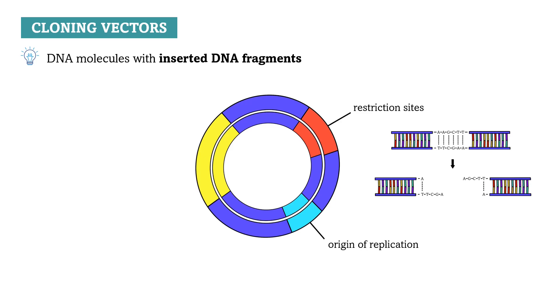And finally, they should carry a selectable marker. For example, an antibiotic resistance gene can act as a selectable marker because it allows us to distinguish them from host cells that do not contain the cloning vector.